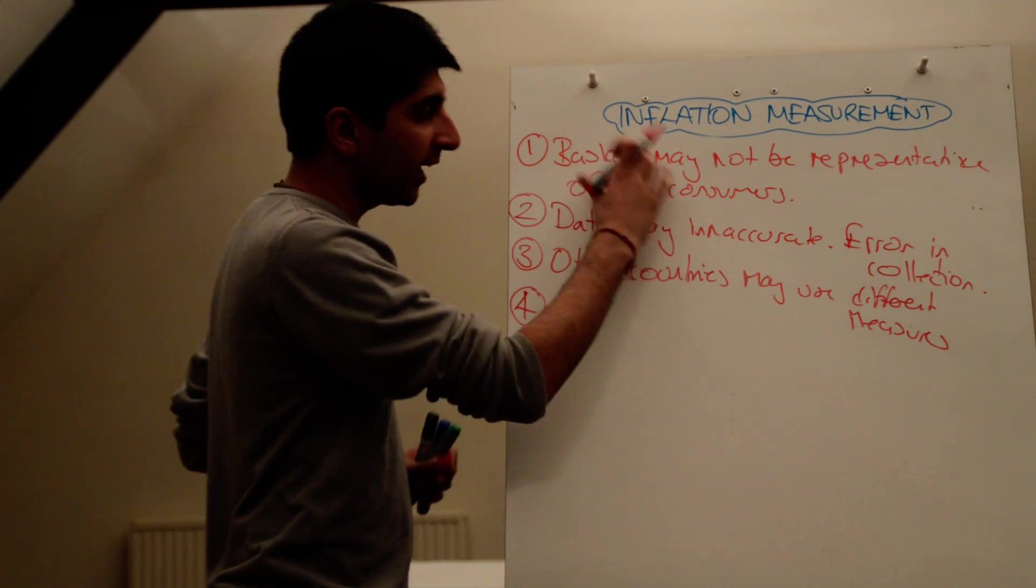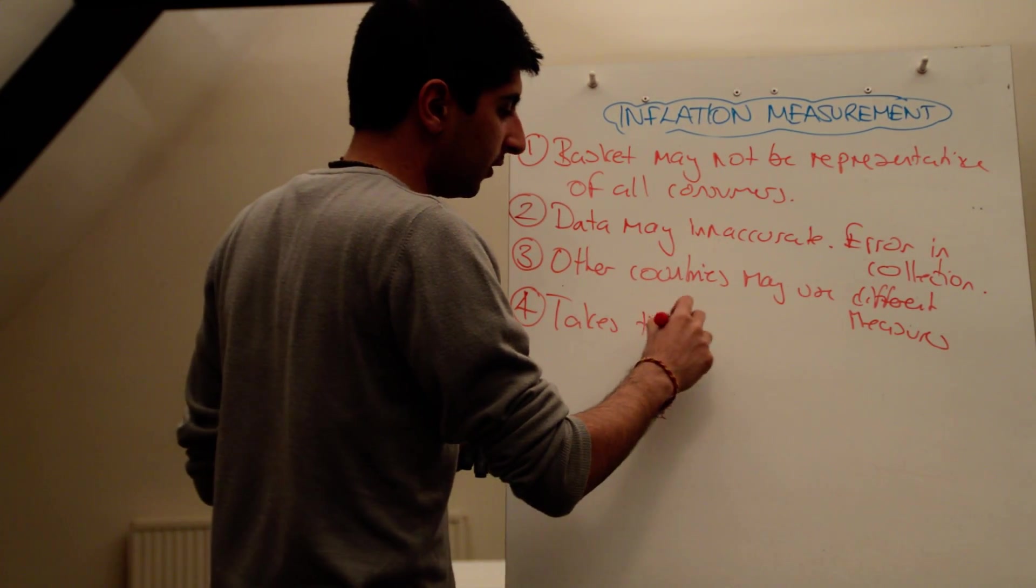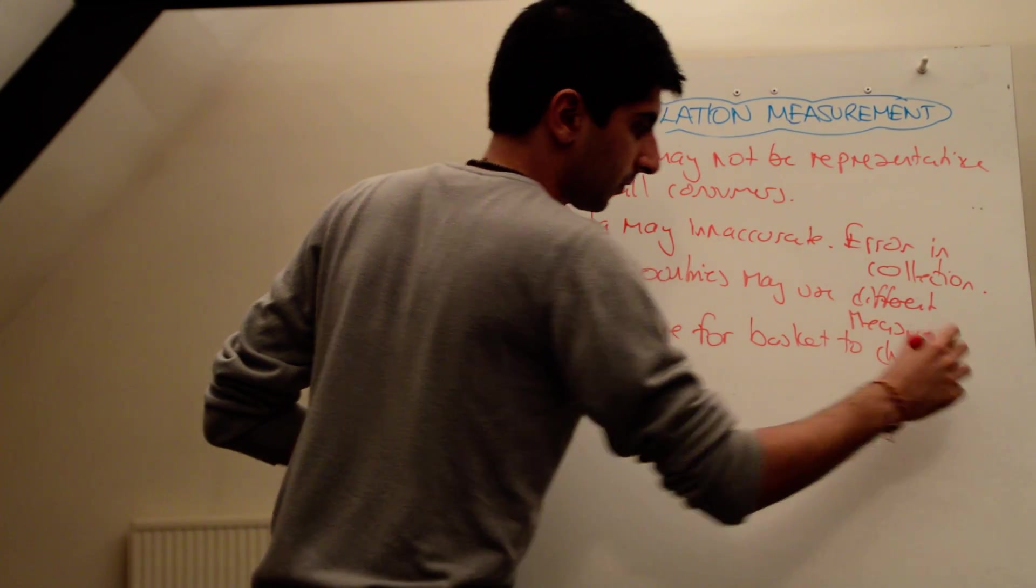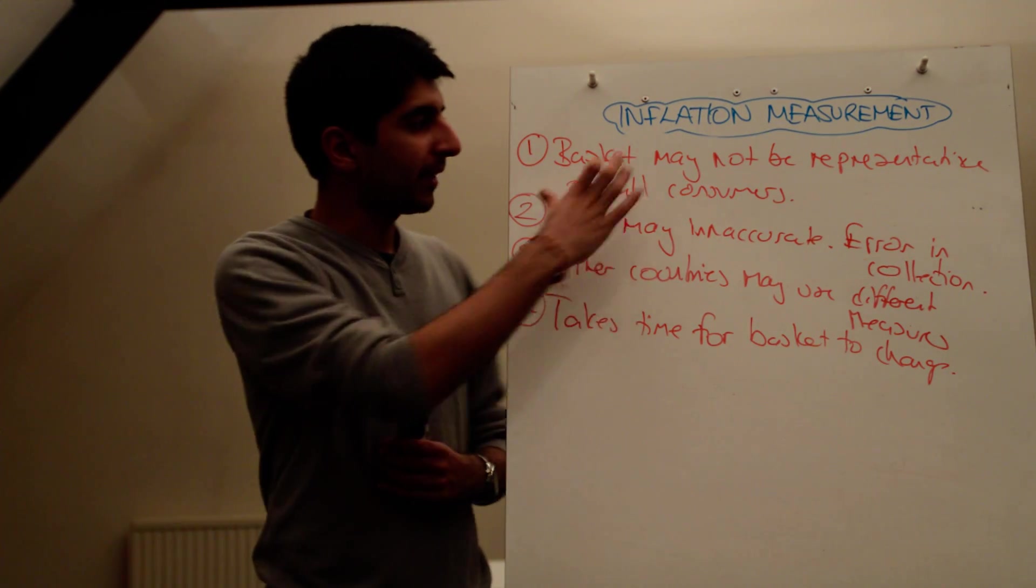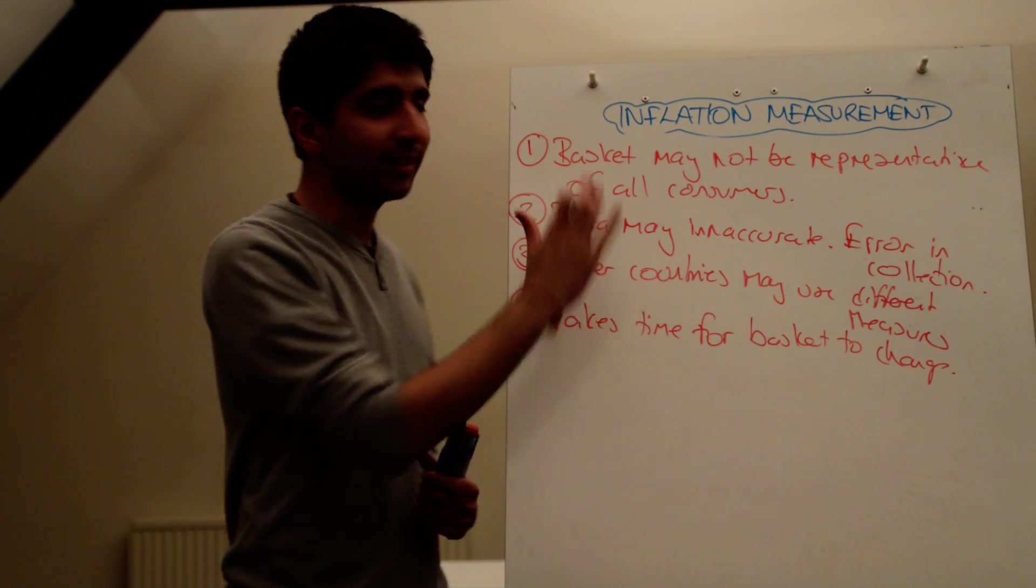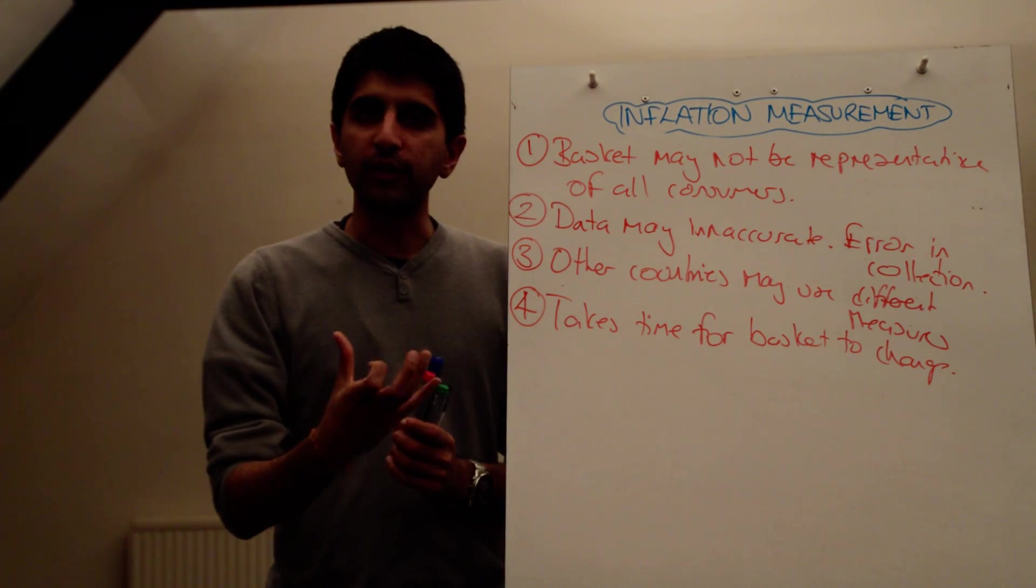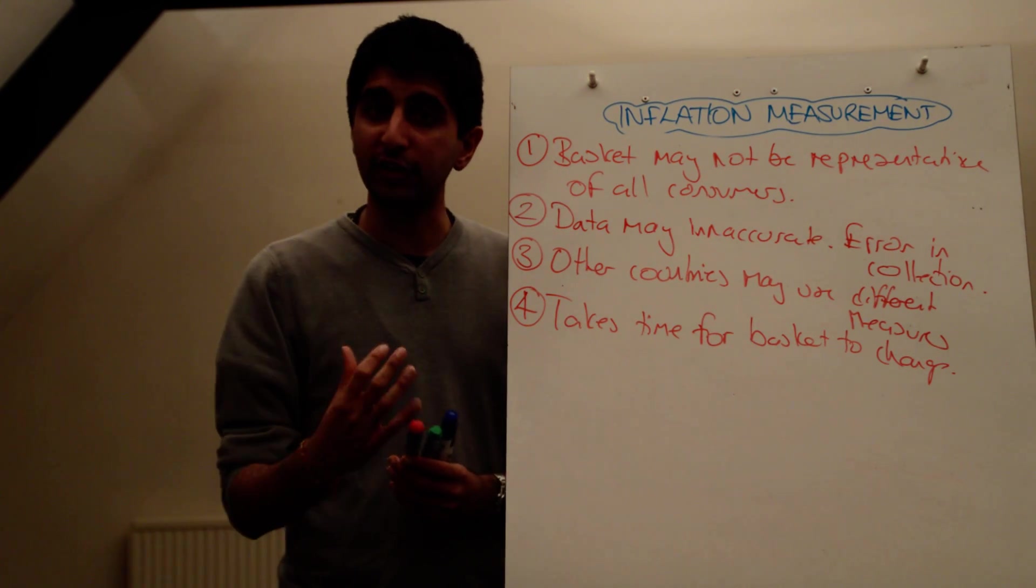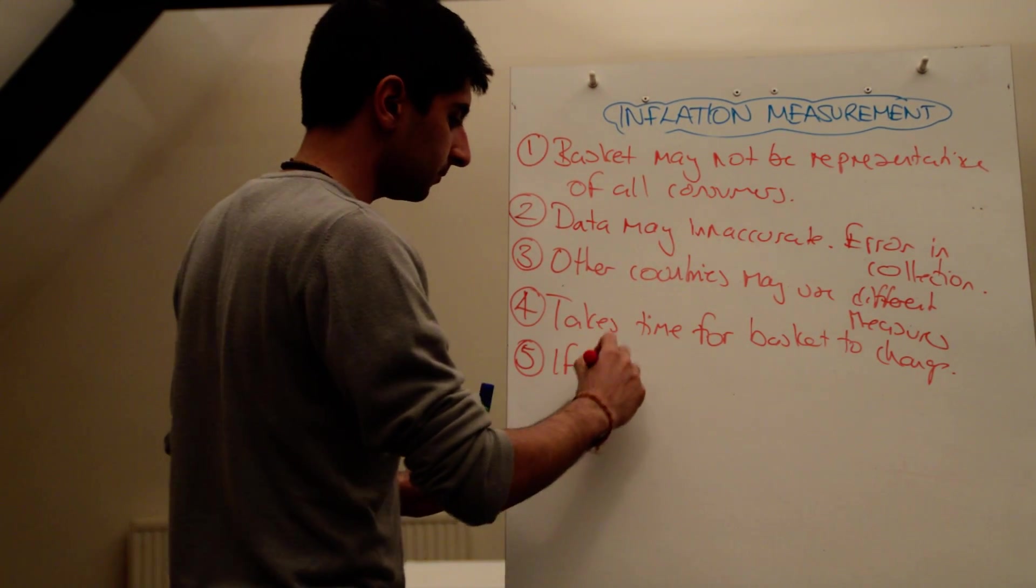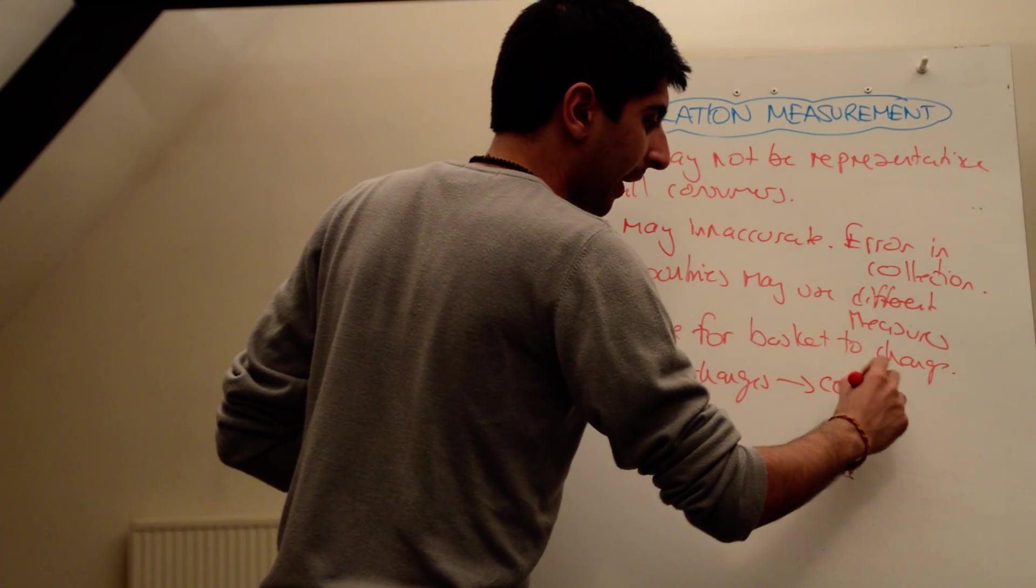Right. Second of all, it might take a while for the basket to change. So every year the basket of goods and services changes. But what if every month our consumption habits change? In which case the basket's changing too slowly. So the time it takes for the basket to change might again distort the true impact on inflation. It might not give us the real impact on what inflation actually is because of the time it takes. And at the same time, if the basket keeps changing, then comparisons to the past become difficult.